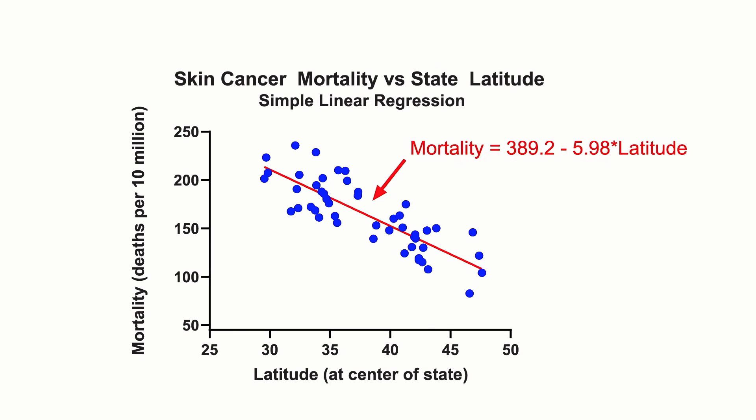With regression, an equation indicated by the red line also shows a negative relationship, but additionally allows for the prediction of skin cancer rates at different latitudes. The slope indicates every one degree increase in latitude decreases mortality by 5.98 deaths per 10 million individuals. The intercept predicts a mortality rate at a latitude of zero — at the equator — of 389.2 deaths per 10 million individuals.